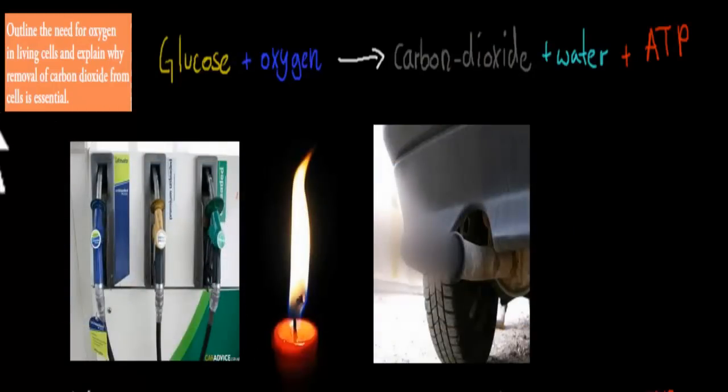Basically, it gave me the answer for the first part of the dot point, which was outline the need for oxygen in living cells. Even though that song didn't actually have oxygen in it, there was no oxygen in that song. But if you remember the animation, we had glucose which went into a cell. But with glucose, there was also this blue dot. And the blue dot was meant to be oxygen. So glucose and oxygen together help us make ATP. And I'll go over again what ATP is in a second.